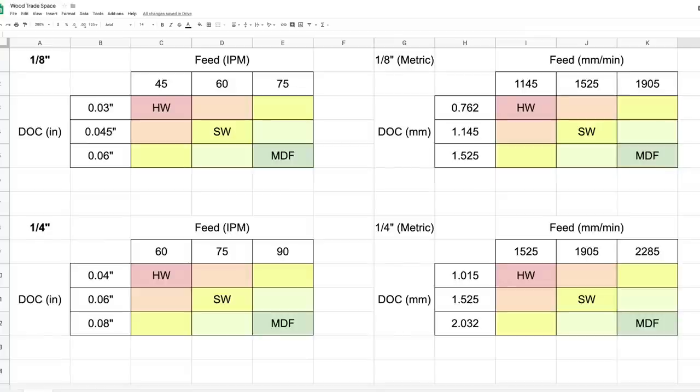In a soft wood, not in the sense of deciduous versus coniferous, but actual mechanical properties, I would go a little slower or shallower than I would for MDF. And with a hard wood, I would go even more conservative than that.